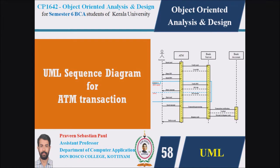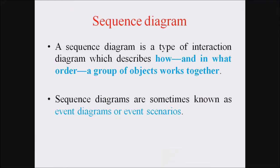In the previous lecture we had discussed what is a sequence diagram. A sequence diagram is a type of interaction diagram which describes how and in what order a group of objects works together. Sequence diagrams are sometimes known as event diagrams or event scenarios.